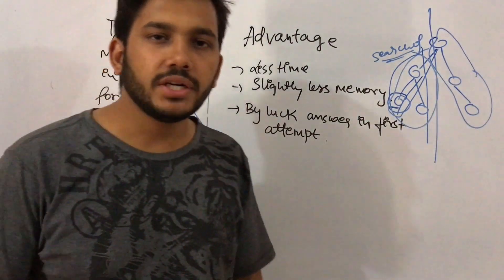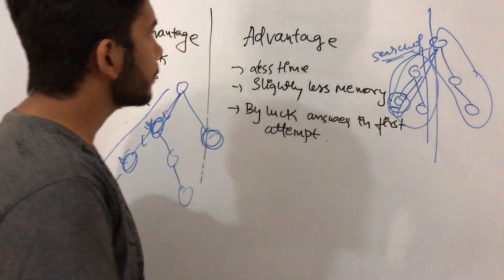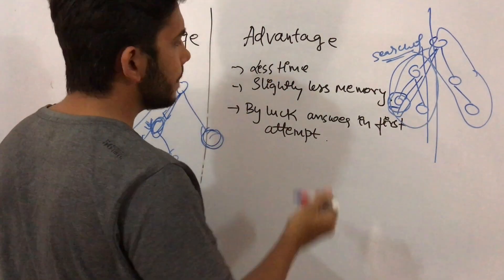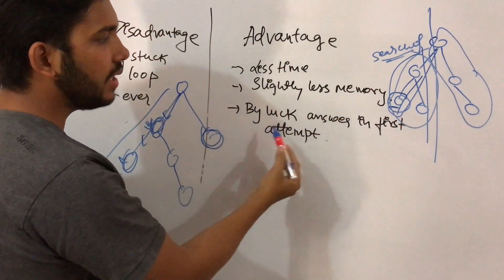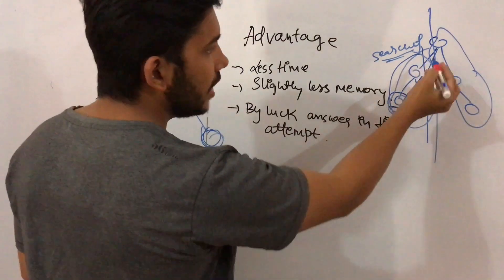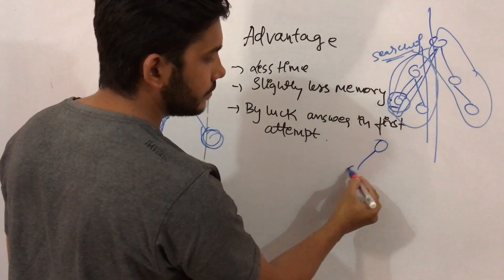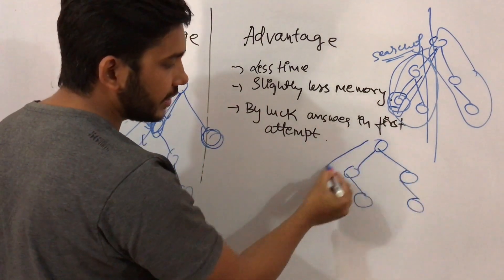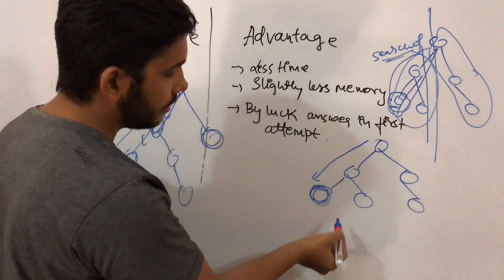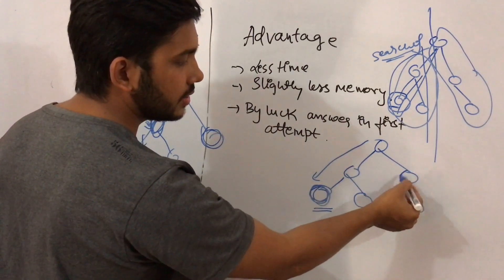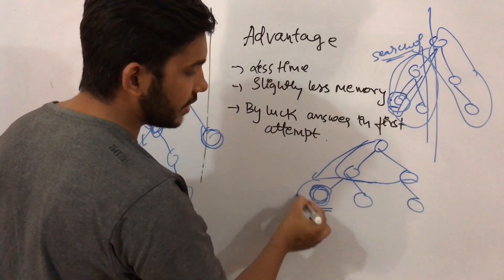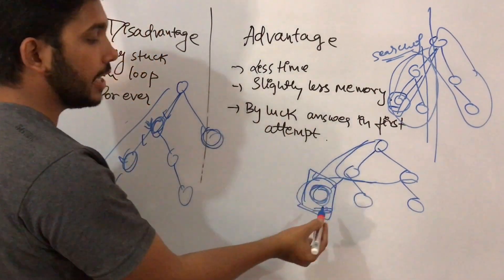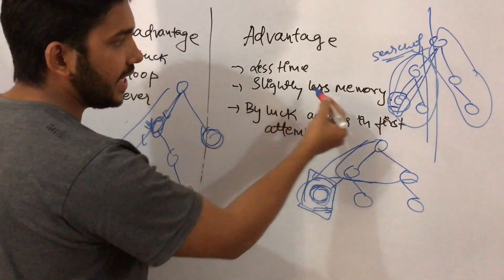The advantages of depth first search are that it takes less time to search an element and slightly less memory. Also, by luck the answer can be found on the first attempt. For example, if you are searching for a particular element, on the first attempt you might find it directly, whereas in breadth first search you would have to search multiple nodes first.